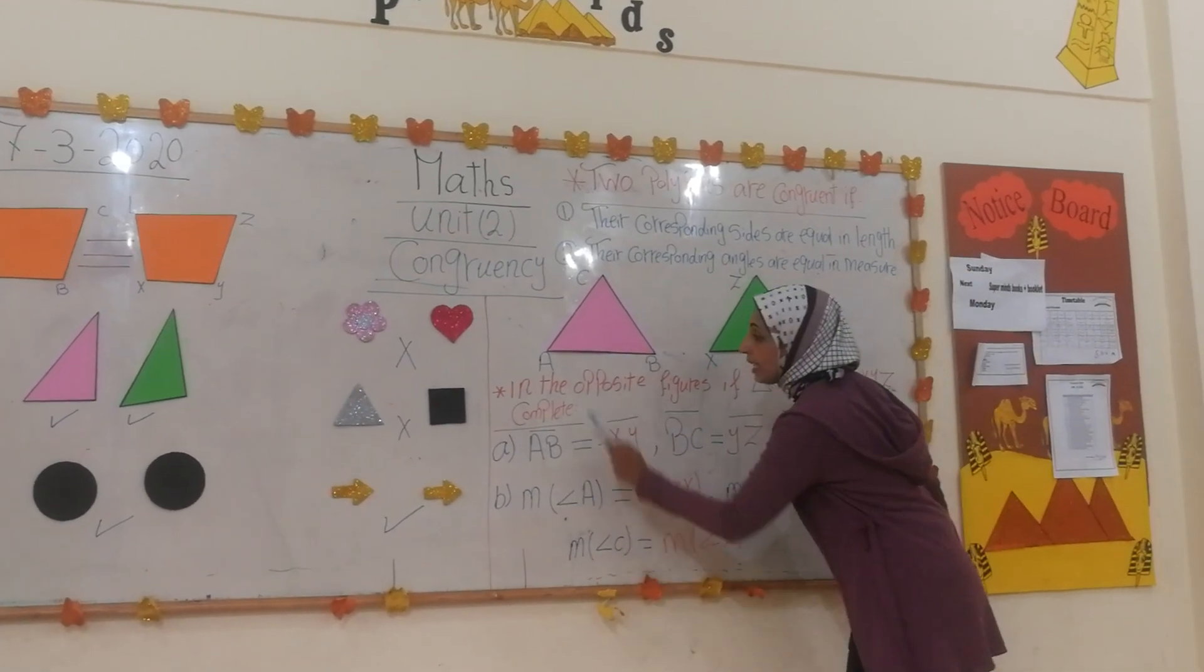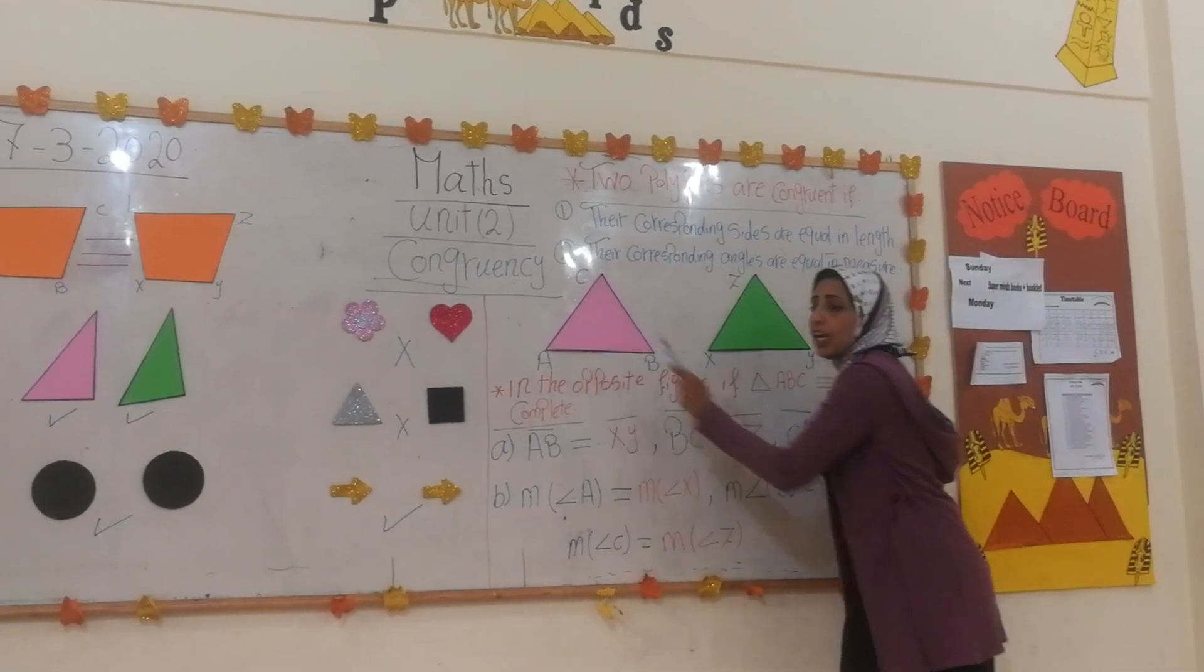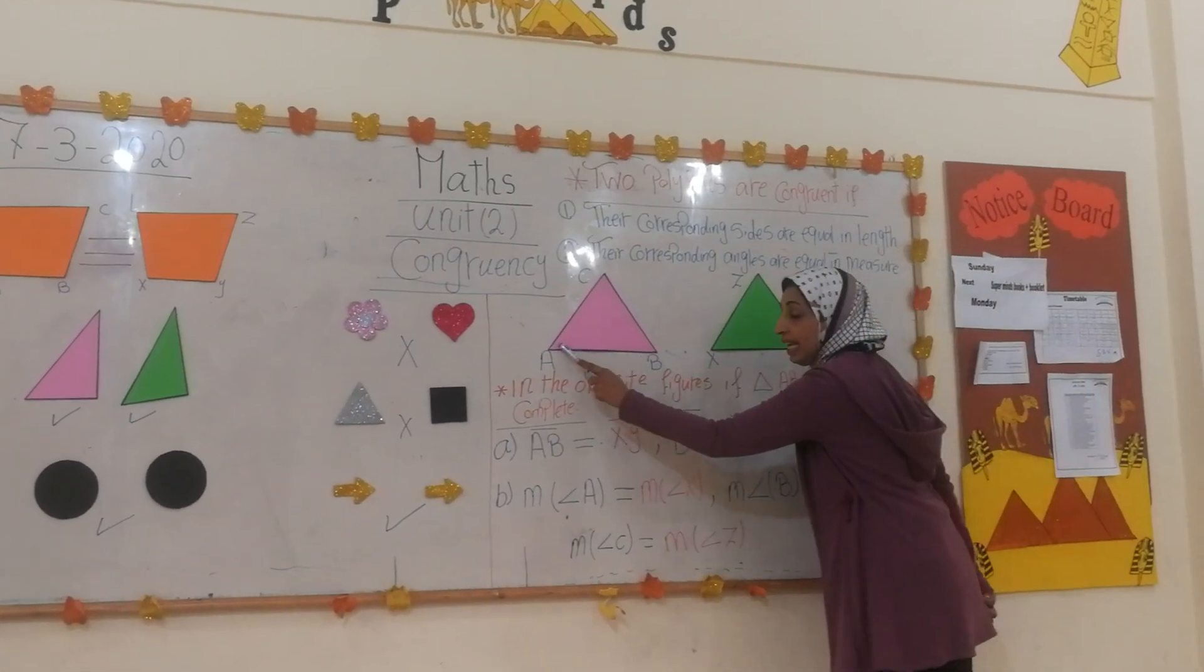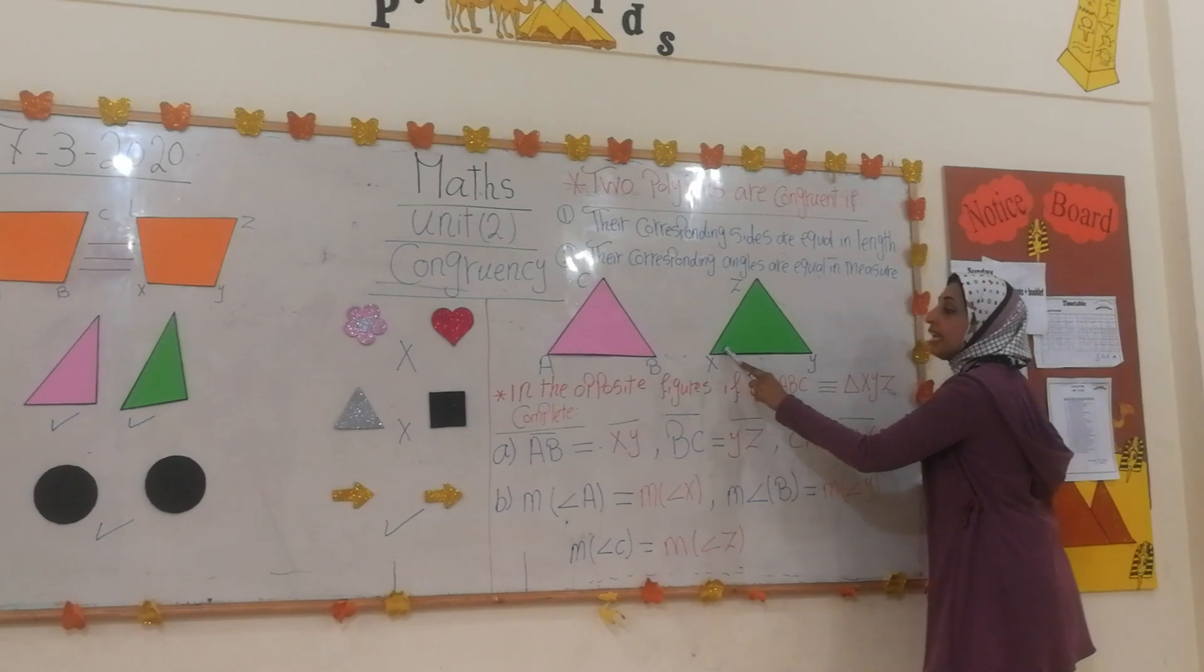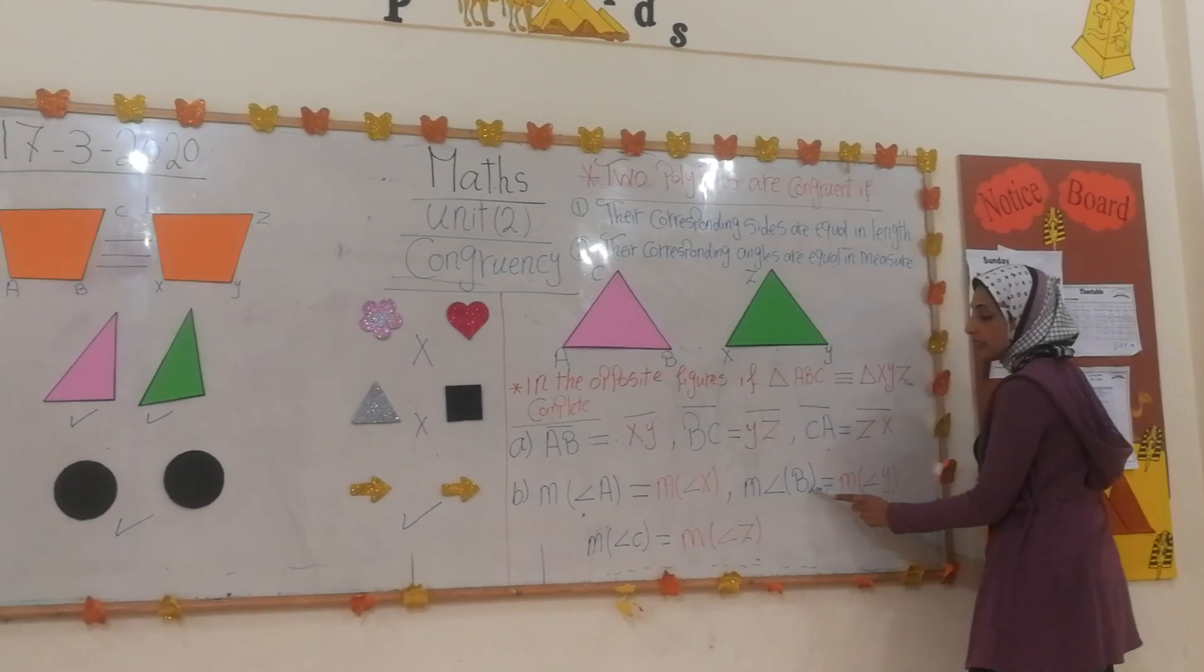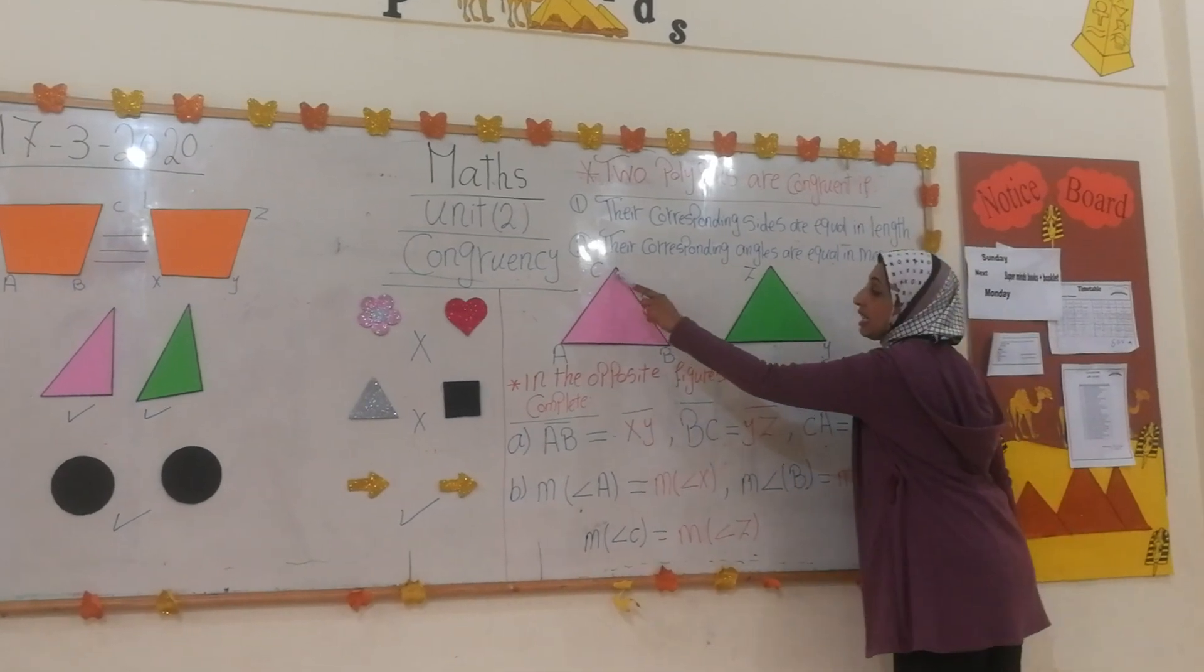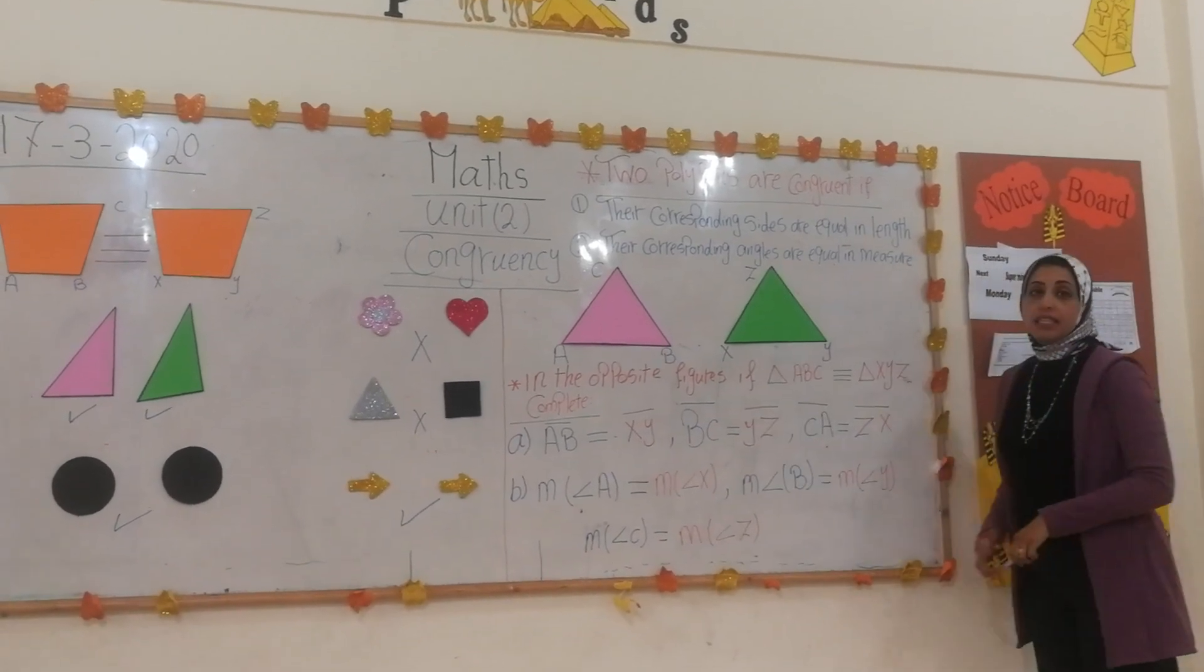Measure of angle A equals what? Which angle? It's angle X. So measure of angle A equals measure of angle X, and measure of angle B equals measure of angle Y, and measure of angle C equals measure of angle Z.